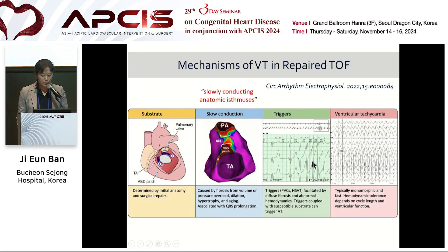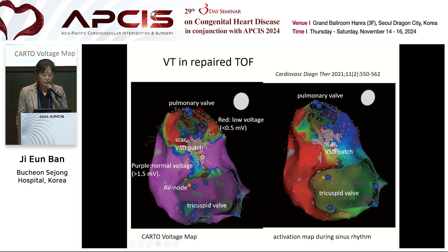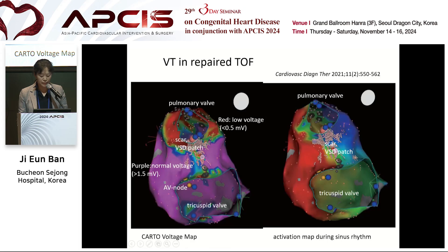As the mechanism of VT, the initial substrate is the consequence of congenital anomaly and surgical repair. Longstanding hemodynamic insult leads to progressive fibrosis and slow conduction, allowing the generation of sustained VT. This is an example of slow conduction anatomic isthmus in repaired TOF. Electroanatomic voltage map and activation map were shown, including the pulmonic valve, tricuspid valve, gray-colored VSD patch scar region, and the anatomic isthmus region.